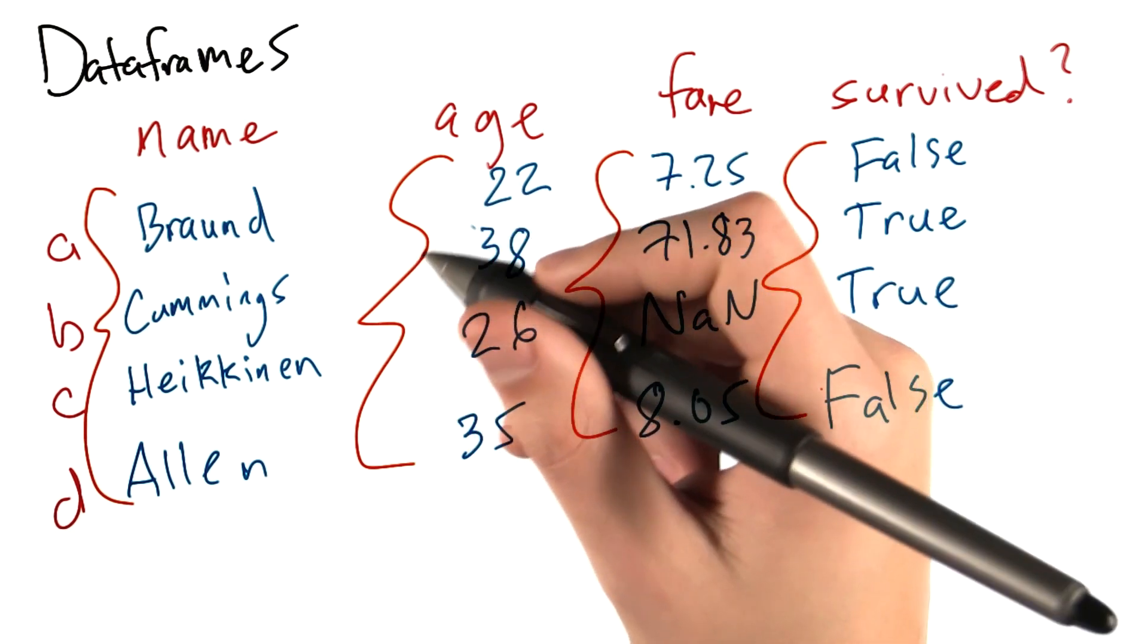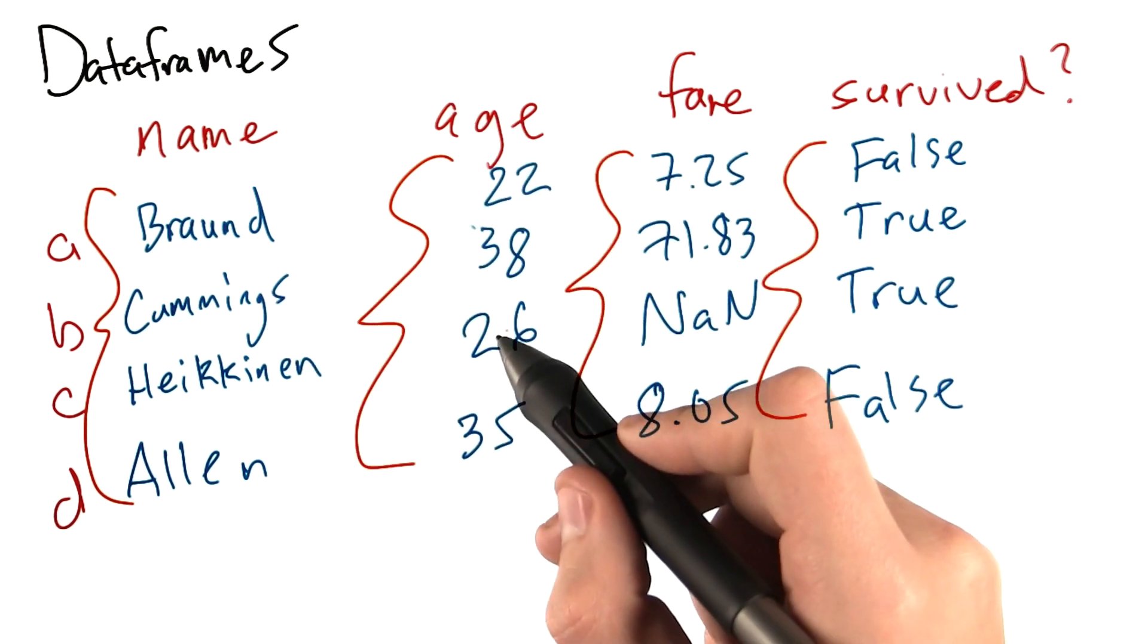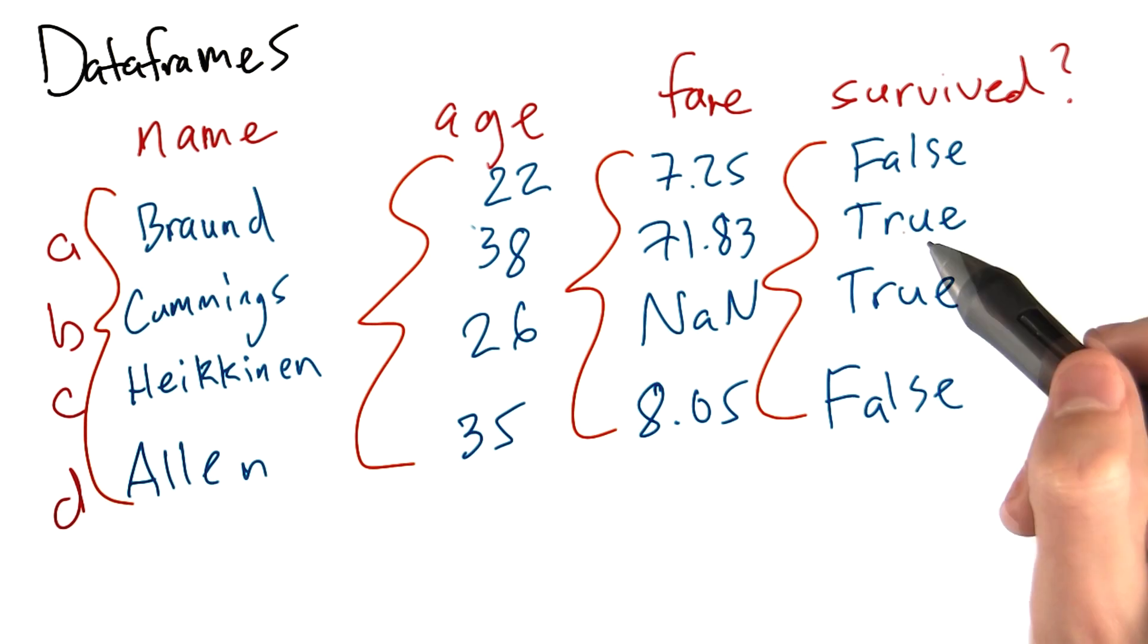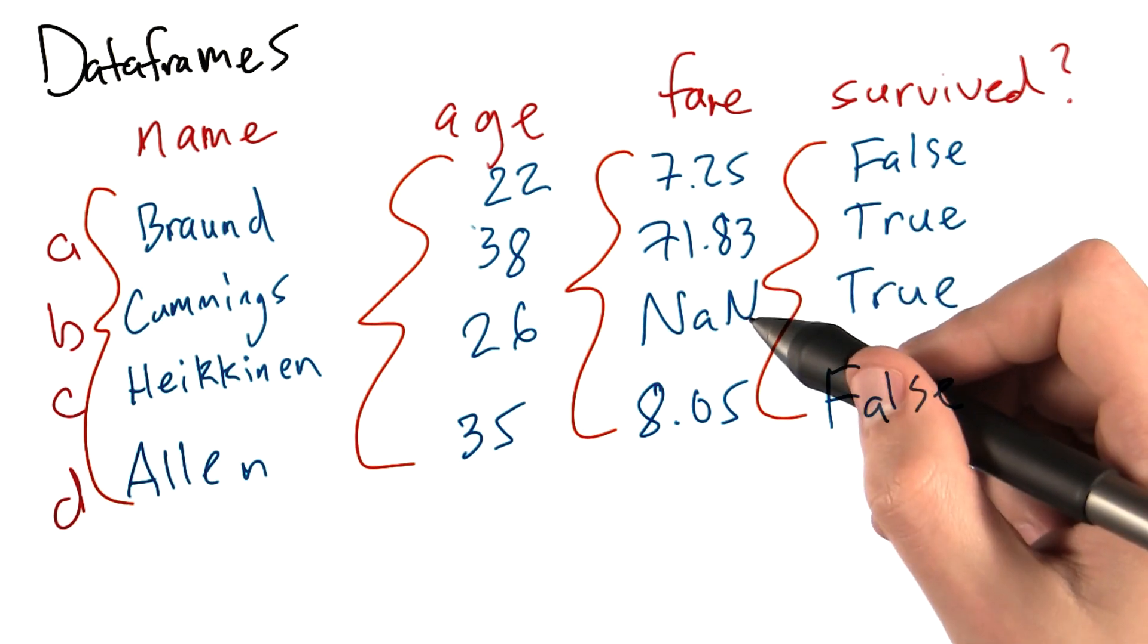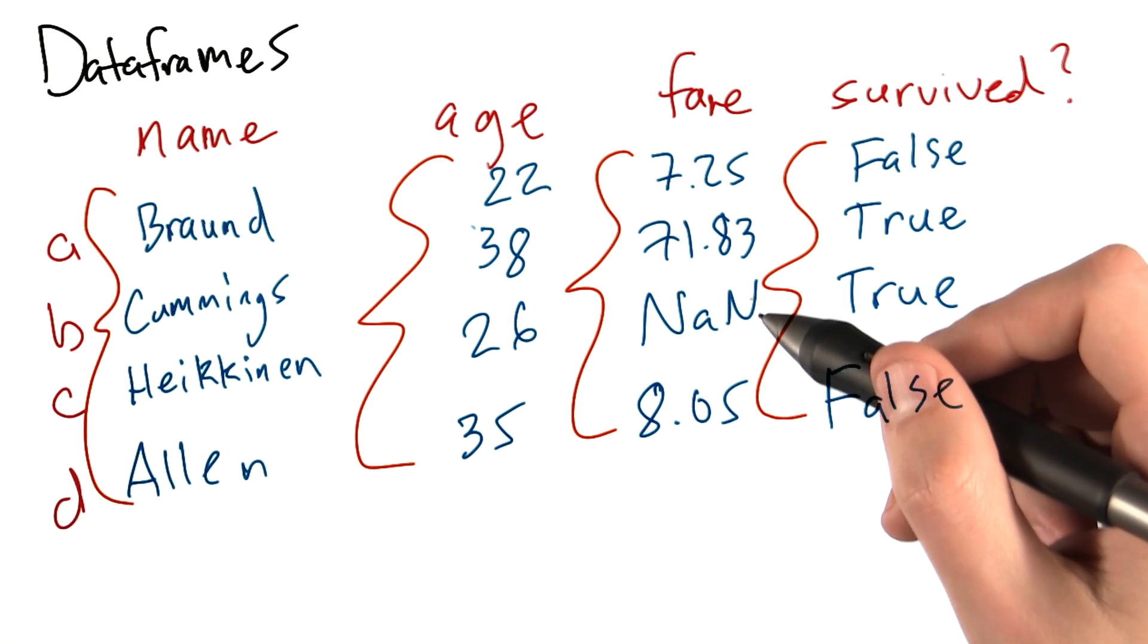Note that there are numerous columns: name, age, fare, and survived. These columns have different data types. There are also some not a number entries, which happen when we don't specify a value.